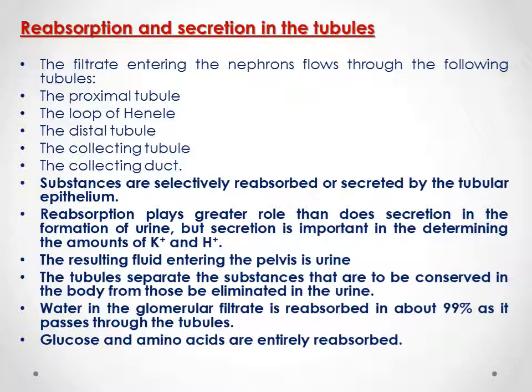There are many important points to keep focused on related to these processes. Substances are selectively reabsorbed or secreted by the tubular epithelium. Reabsorption plays a greater role than secretion in the formation of urine. However, secretion is important when it is related to releasing specific ions such as potassium and hydrogen, and also in releasing specific toxic materials. The resulting fluid entering the tubules is now the urine. It is to separate the substances that are to be conserved in the body from those that must be eliminated from the body in the urine.